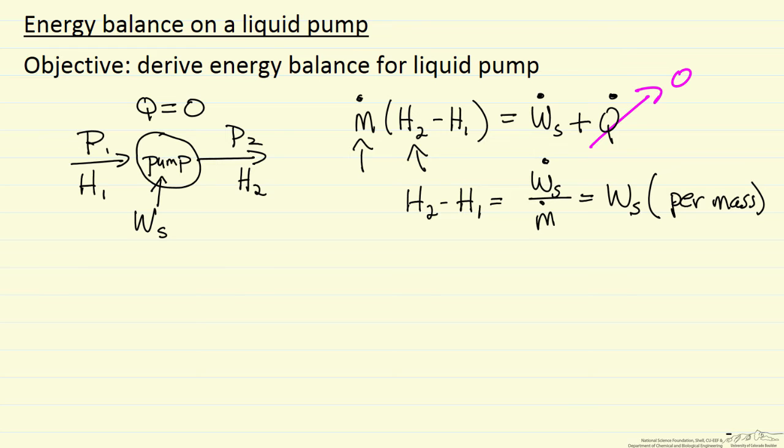So how do we get the enthalpy values? We want to go back and look at the differential form of the first law. Let's look at the general form, and we're going to do this reversibly. DQ is TDS, temperature times entropy change, and DW is minus PDV, pressure times the volume change.